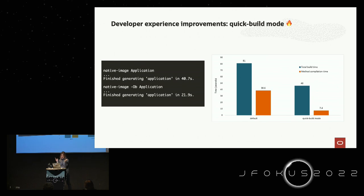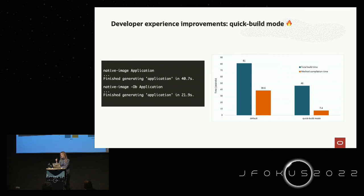In quick build mode you get faster builds and quicker feedback on whether your application compiles and behaves correctly, but at the cost of runtime performance — it performs fewer optimizations. For production you'd still want the default mode with full optimization. To illustrate: for a sample application, using the -Ob flag, the overall build time was almost twice as fast.